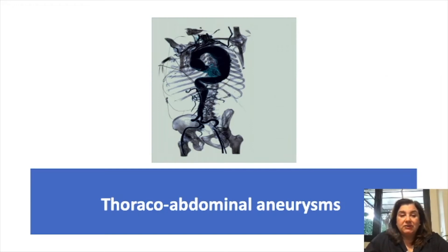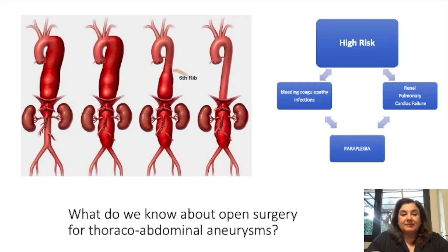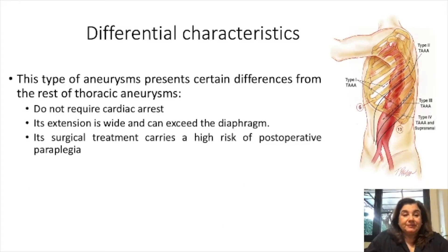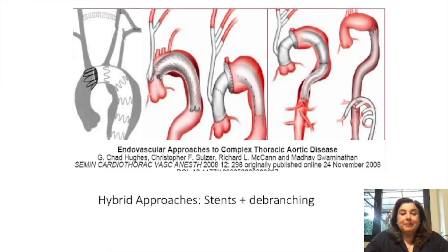What do we know about open surgery for thoraco-abdominal aneurysms? It is high-risk surgery with risks of bleeding, neuropathy, infection, renal, pulmonary and cardiac failure, and paraplegia. This type of aneurysm presents 13 differences from the rest of thoracic aneurysms: it does not require cardiac arrest, its extension is wide and can extend past the diaphragm, and surgical treatment carries a high risk of post-operative paraplegia. There are also hybrid approaches with stents and debranching.